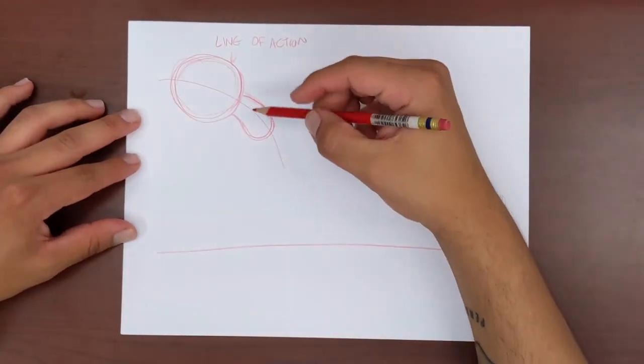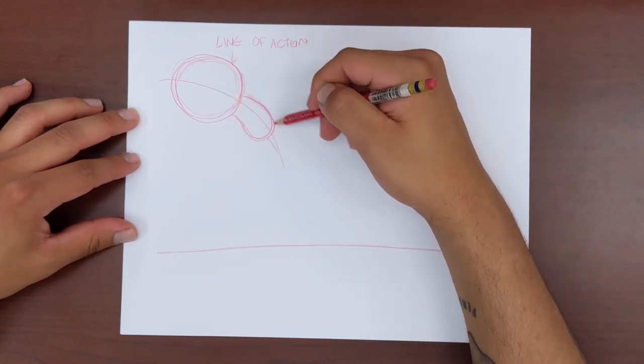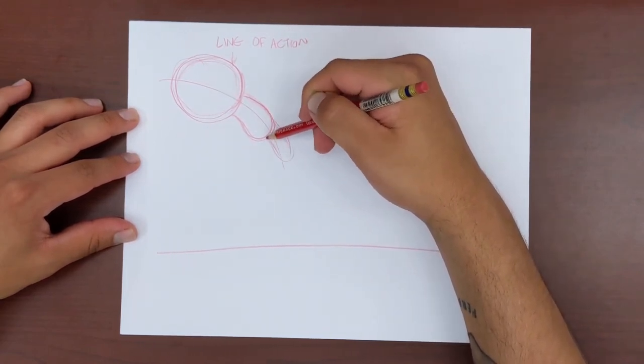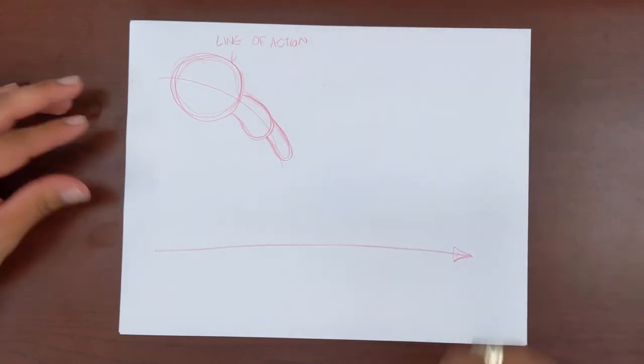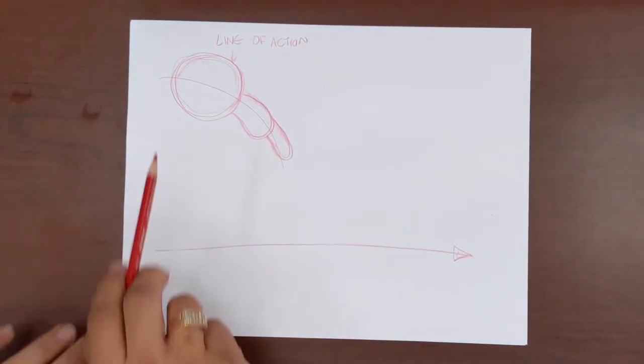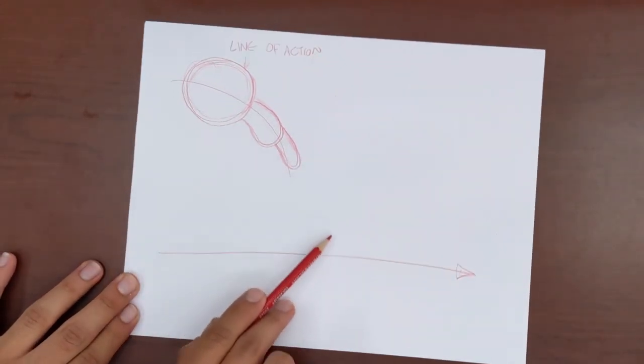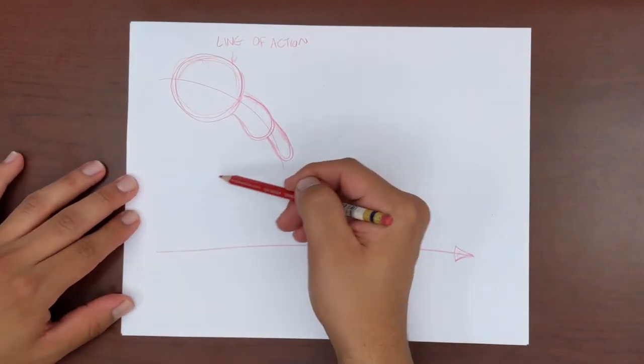Now we can measure out our character's body right under their head. Next, we can use our line of action to also draw our forward striding leg, just like so. Again, we do not have to draw our character's body perfectly aligned with our line of action, but we can use the line of action to help guide the motion of our character's body.